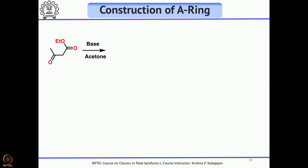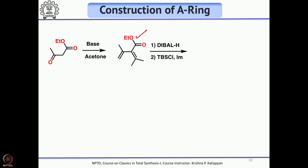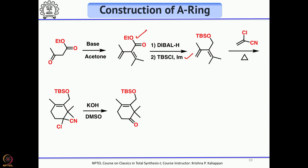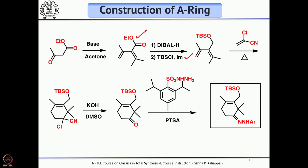For the A ring, Nicolaou started with ethyl acetoacetate, treated with base in the presence of acetone to introduce the C–CH₃, then reduced the ester with DIBAL to give the alcohol, which was protected as a TBS ether. This gave the diene ready for the Diels-Alder reaction. Heating with alpha-chloroacrylonitrile gave the major product; hydrolysis with KOH in DMSO gave the ketone. The tosylhydrazone — either simple or 2,6-diisopropyl tosylhydrazone — was then prepared. The A ring is ready.